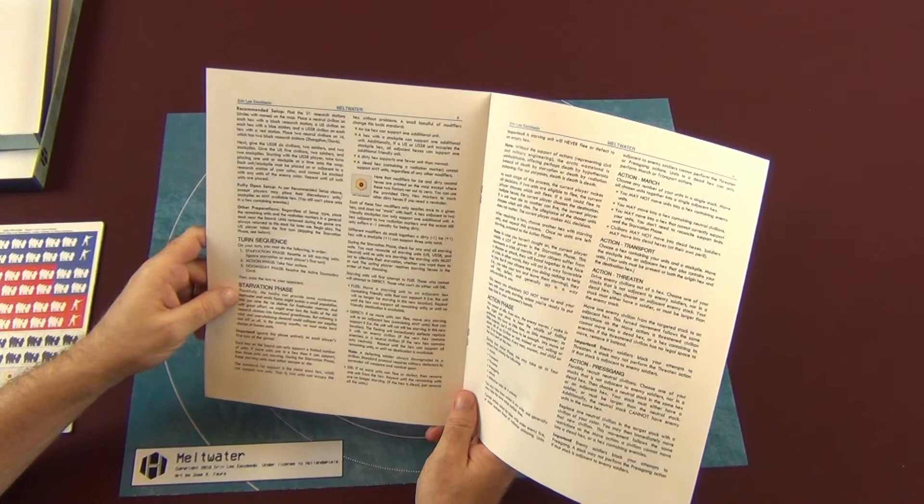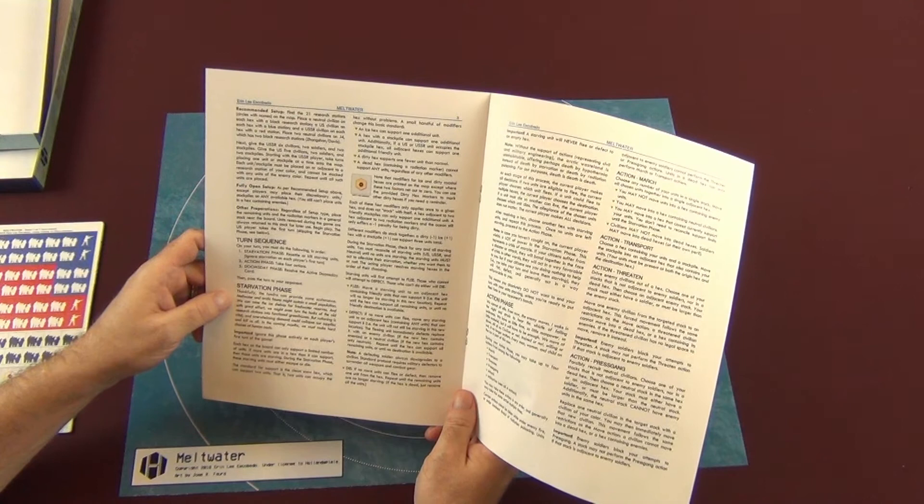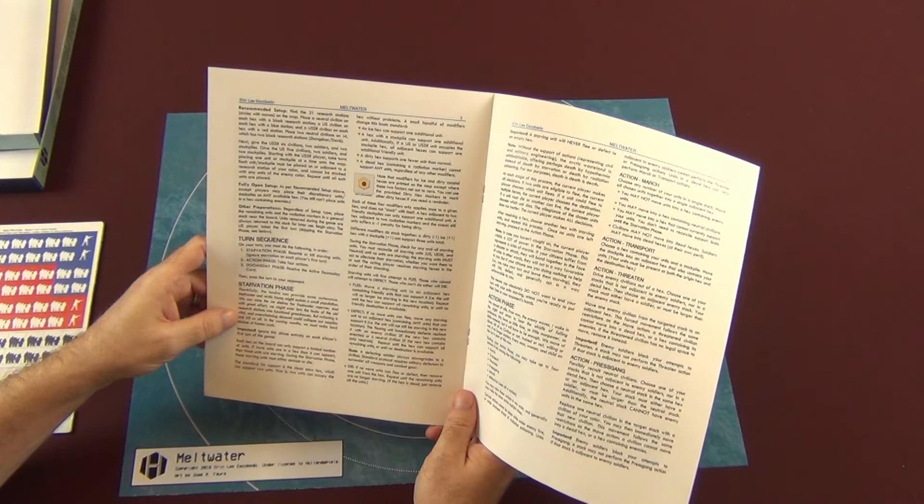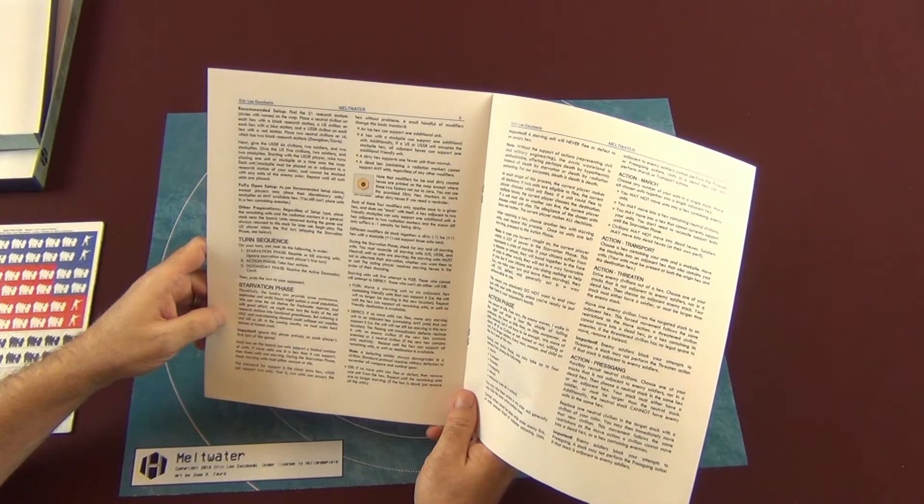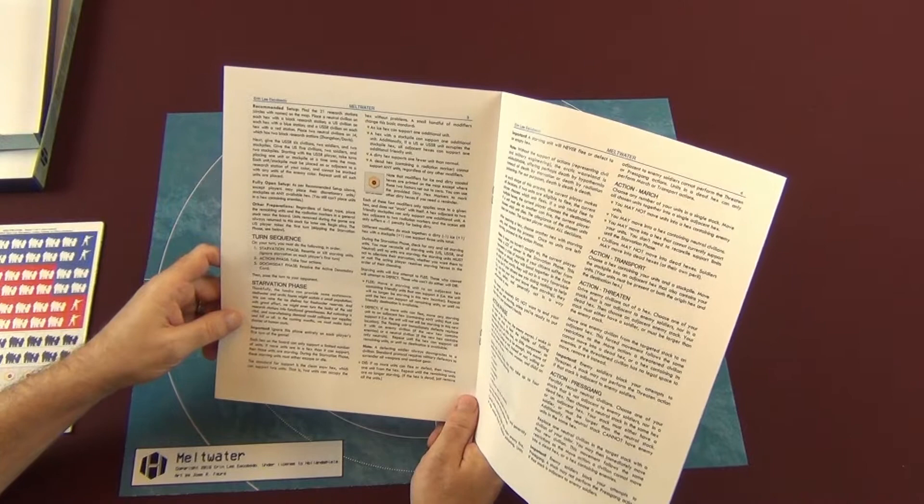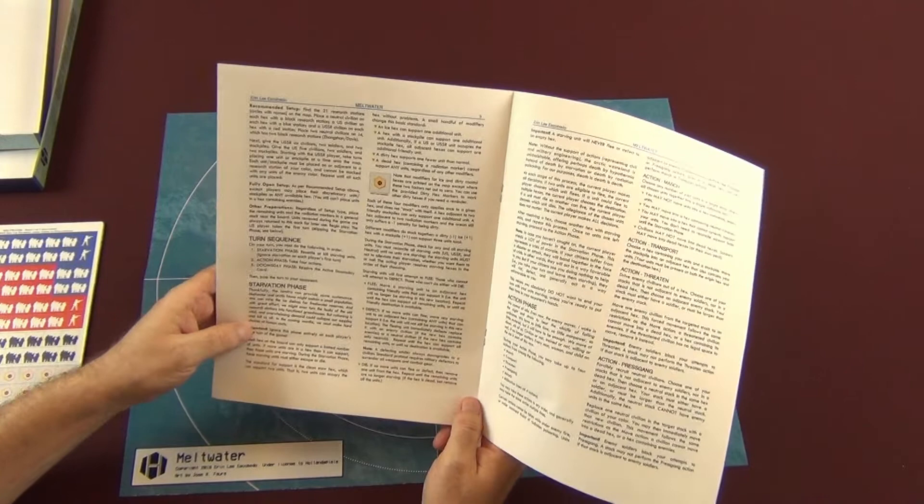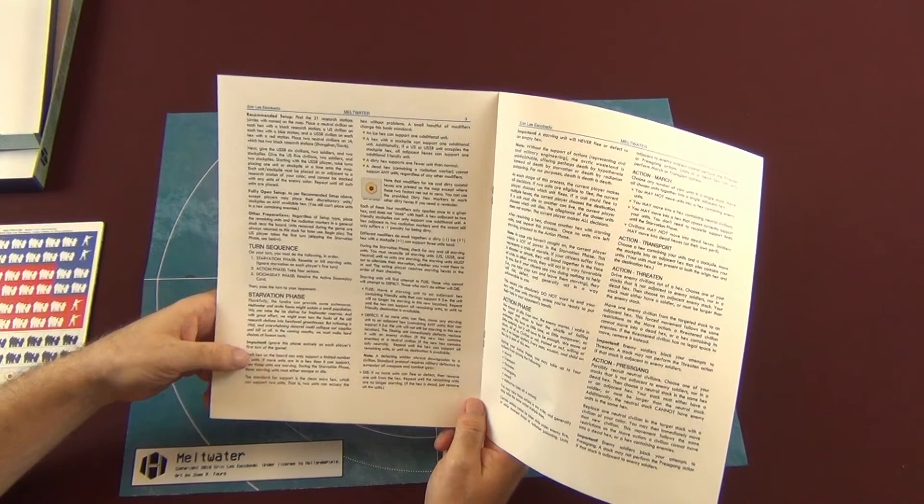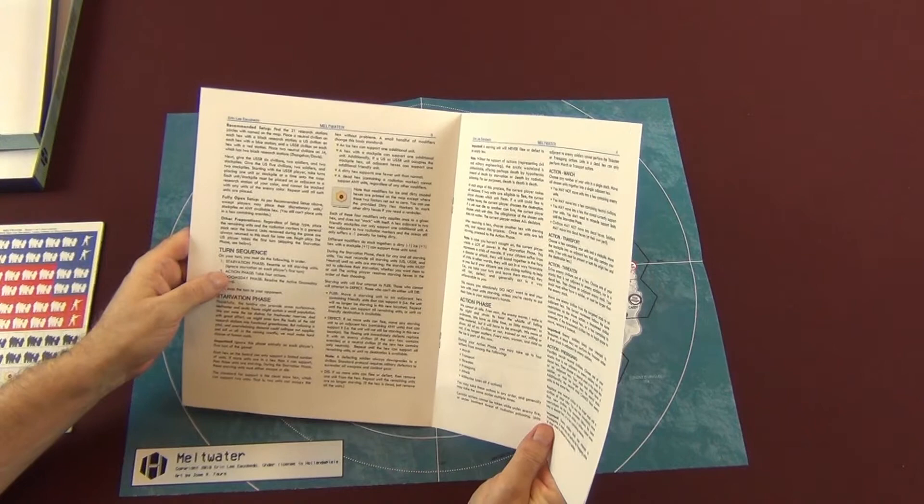Starvation phase: thankfully the tundra can provide some sustenance. Meltwater and arctic fauna might sustain a small population. We can mine the ice shells for freshwater reserves, and with great effort we might even turn the husks of the old research stations into functional greenhouses. But rationing is vital and overwhelming demand could collapse our supplies and kill us all. In the coming months we must make hard choices of human costs.